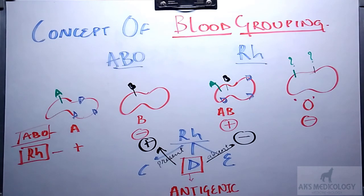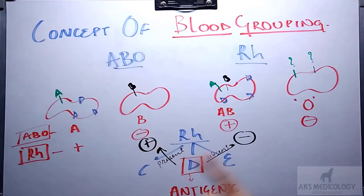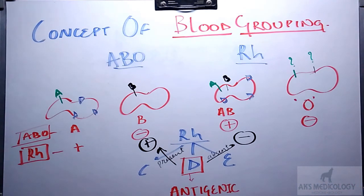Generally, when we get our blood grouping profile, both ABO and RH blood groups are represented together. Therefore, whenever we read our blood grouping report, we get our blood group such as A positive, B negative, AB positive, or O negative. It is all dependent upon the presence or absence of antigens over the surface of RBCs.